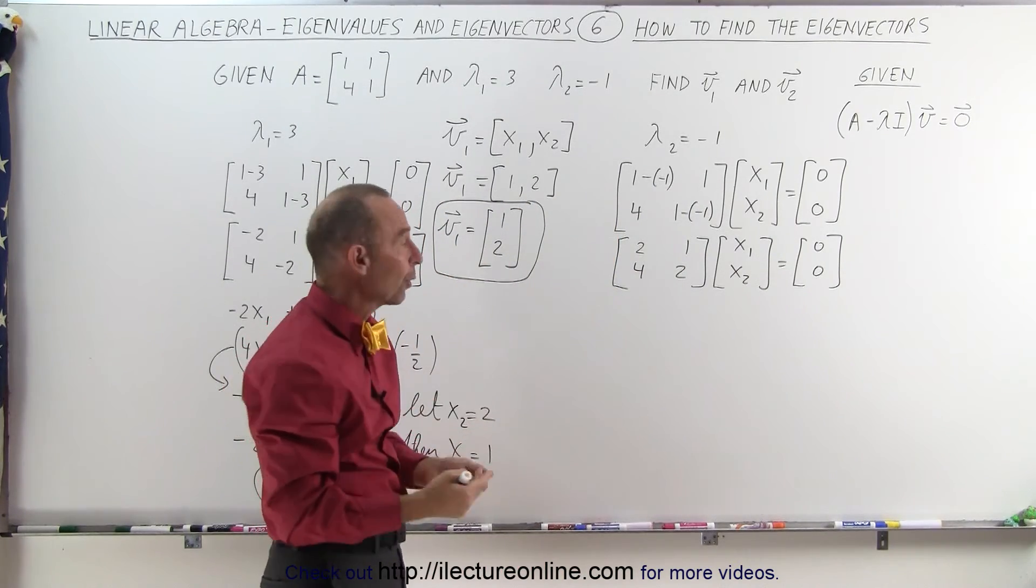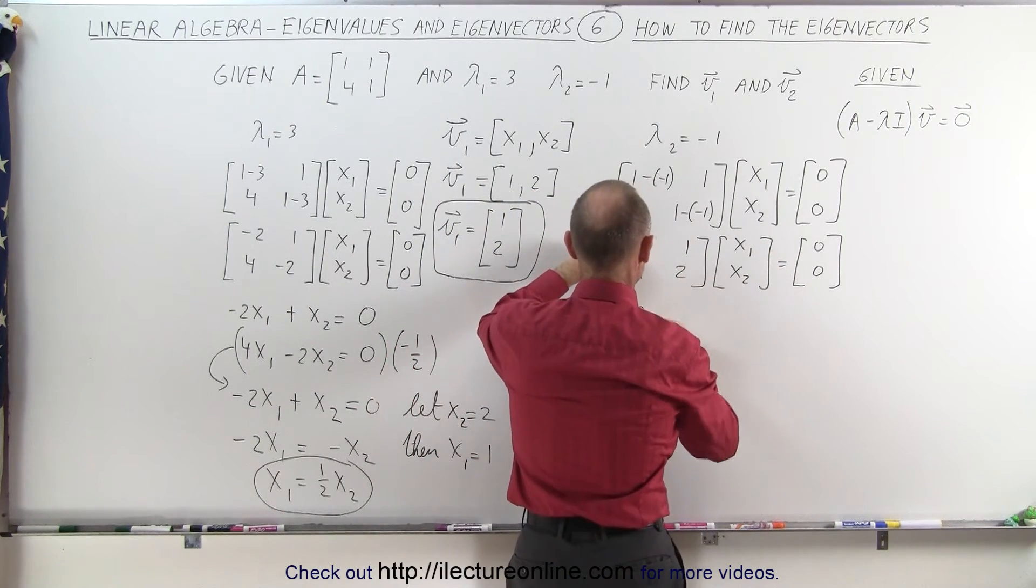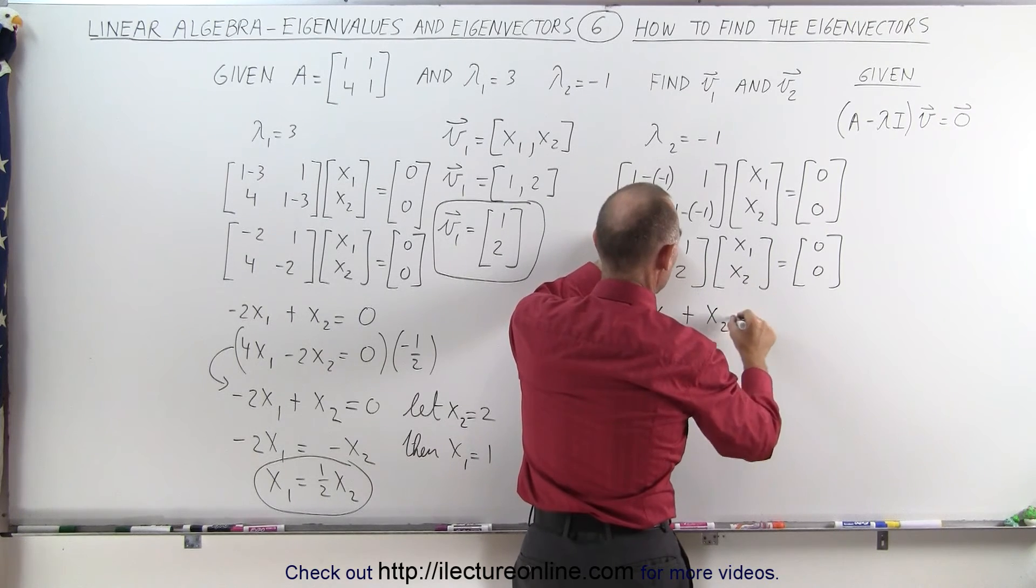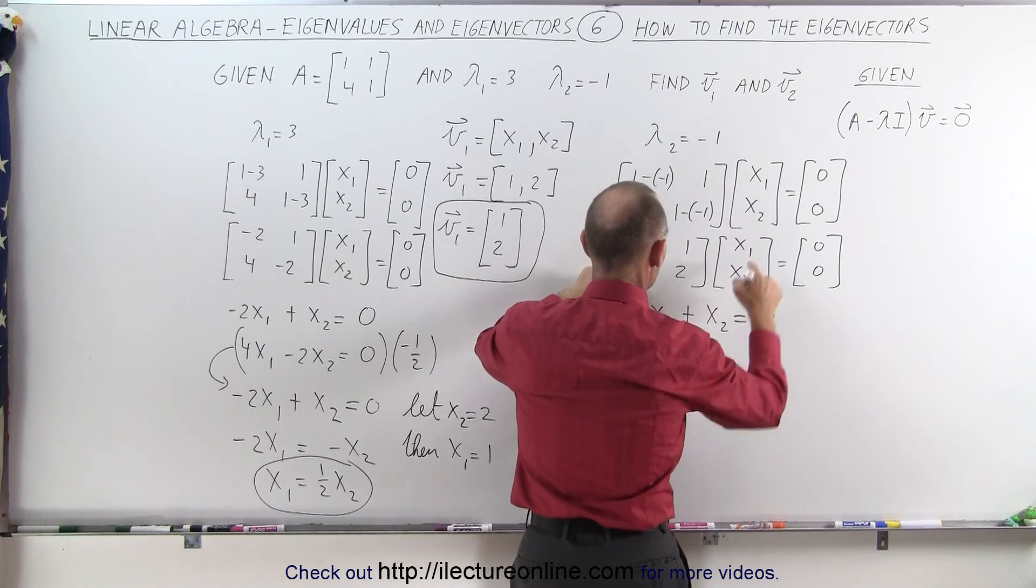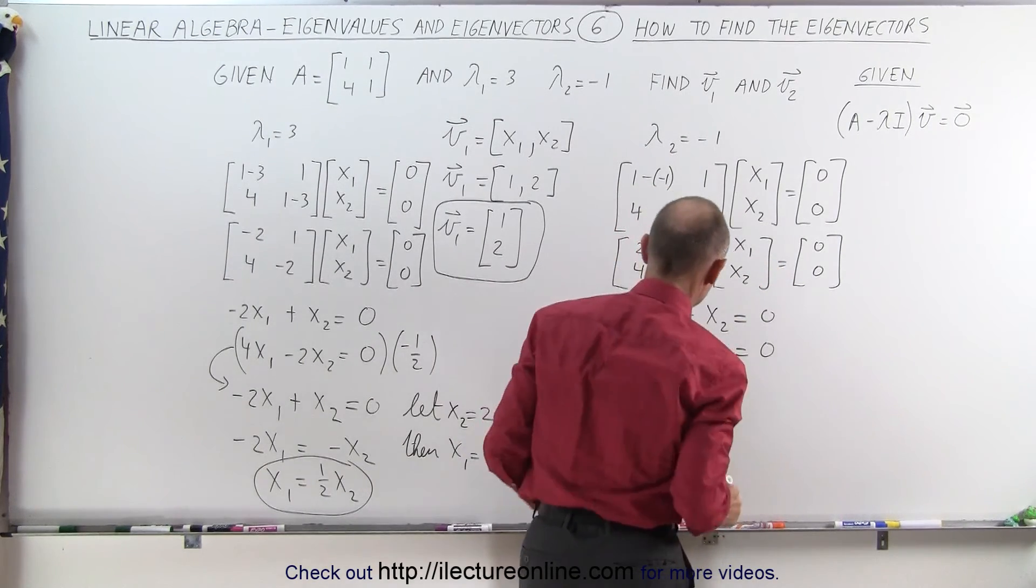This is like a system of linear equations. We'll go ahead and multiply these vectors together. So we get 2 times x1 plus x2 equals 0, and 4 times x1 plus 2 times x2 equals 0.